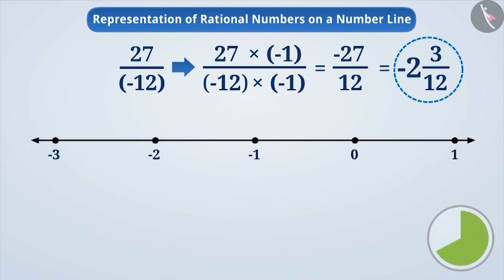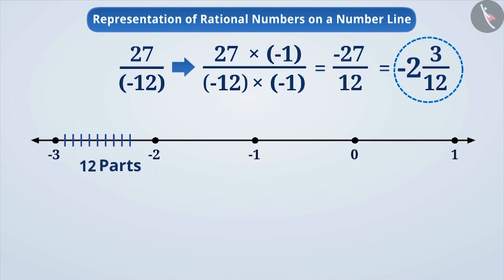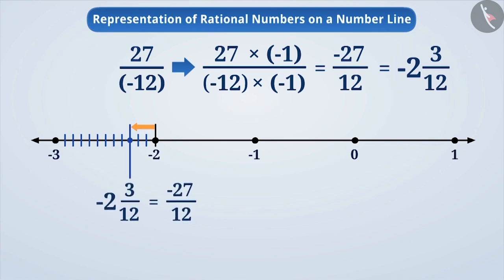The position of minus 2 and 3 by 12 will come to the left of minus 2 but to the right of minus 3 — that is, it will come between minus 2 and minus 3. To get the exact point, we will divide the distance from minus 2 to minus 3 into 12 equal parts. Since the numerator is 3, we will take three steps to the left of minus 2. We will mark the final point as minus 2 and 3 by 12, or minus 27 by 12, or 27 by minus 12.